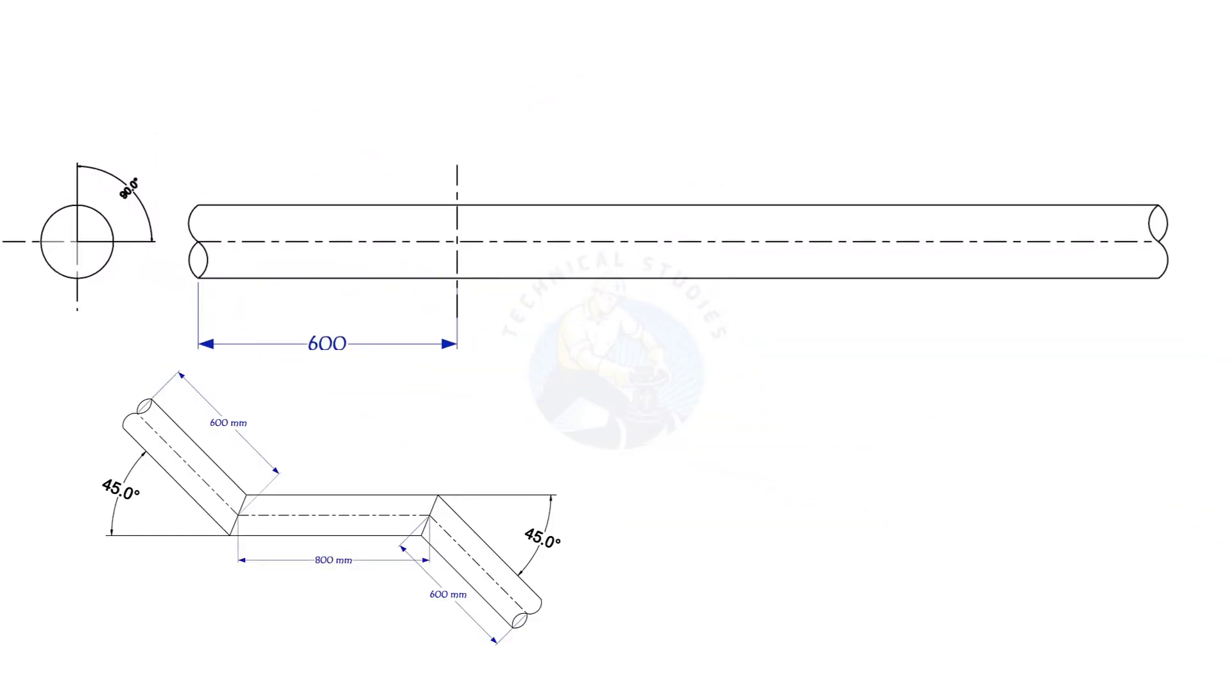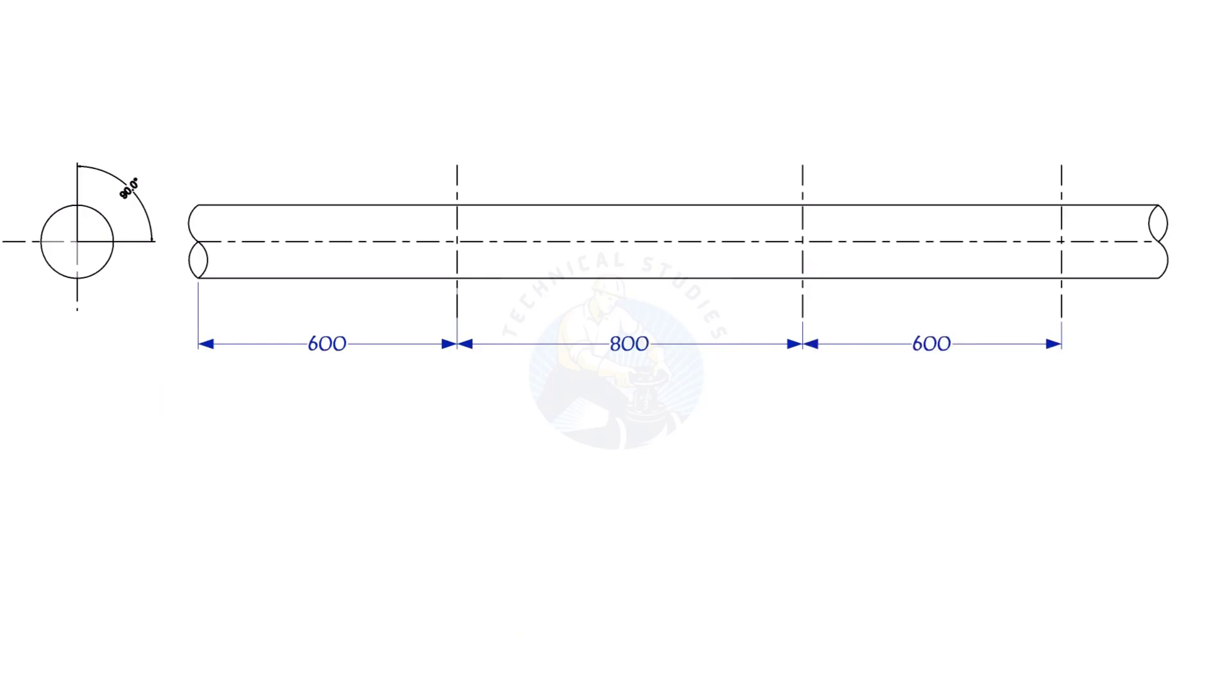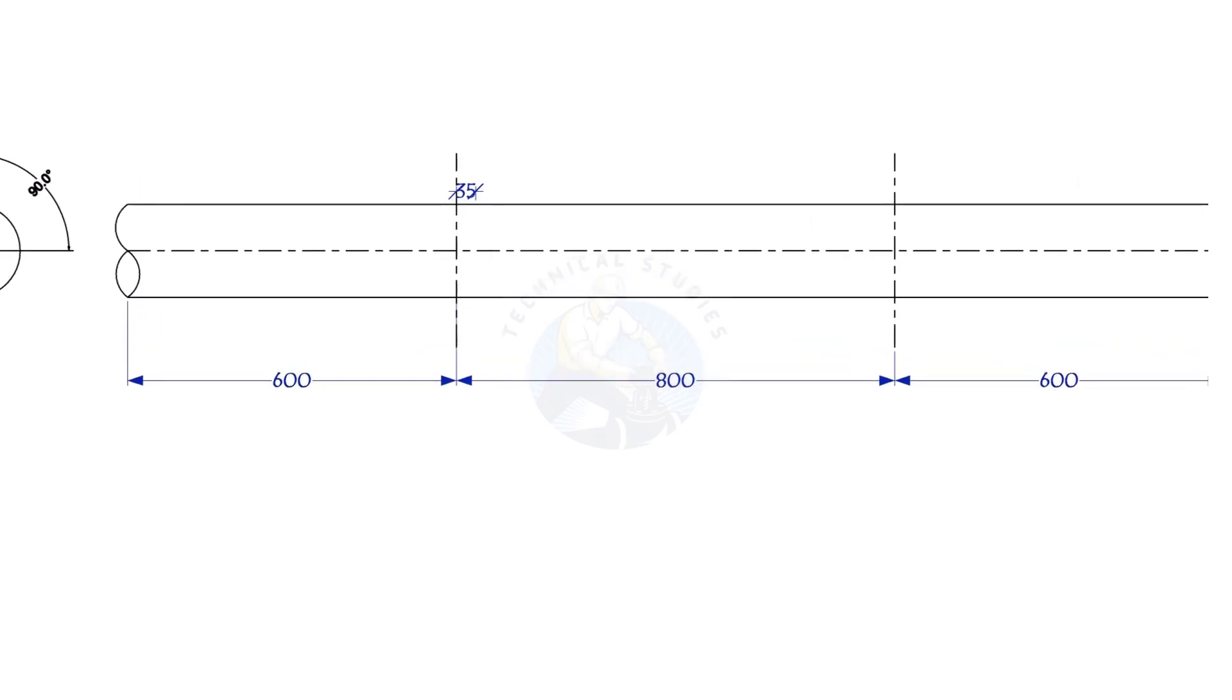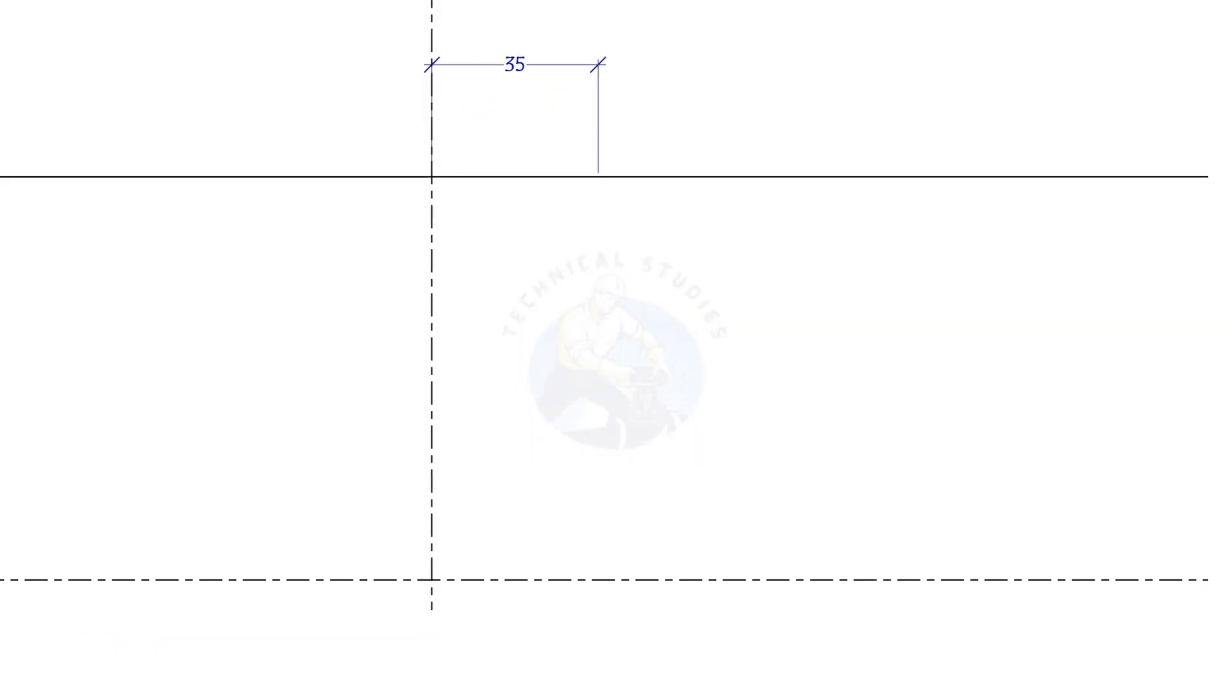Mark 600, 800, and 600 mm, respectively, as shown. Mark 35 mm to the right on the top side line and 35 mm to the left side on the bottom line.